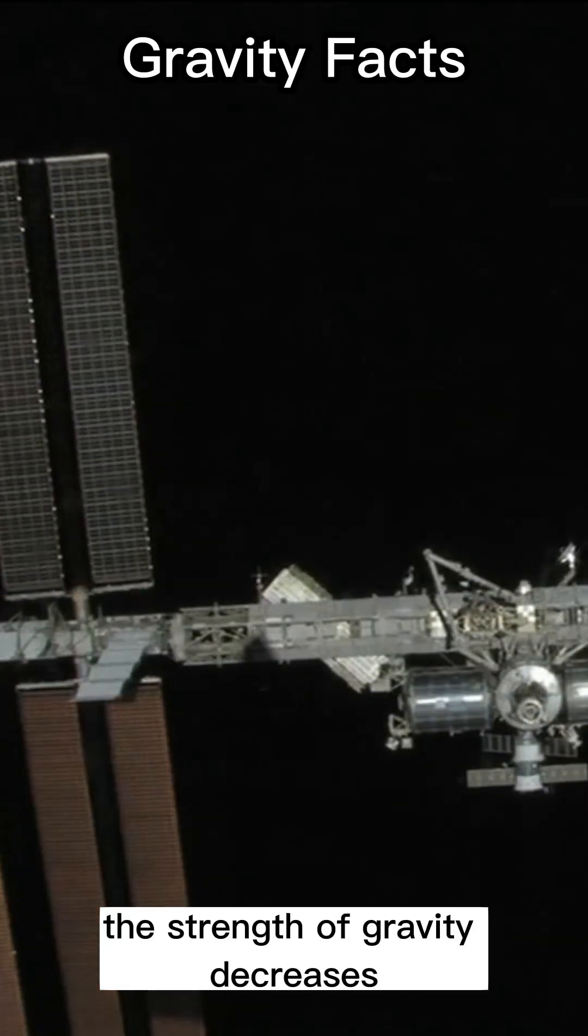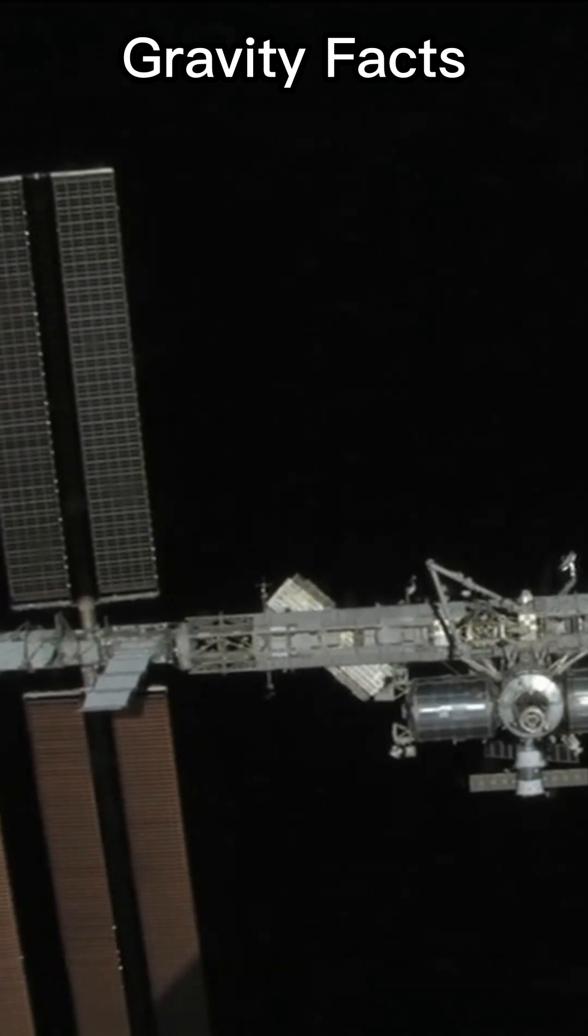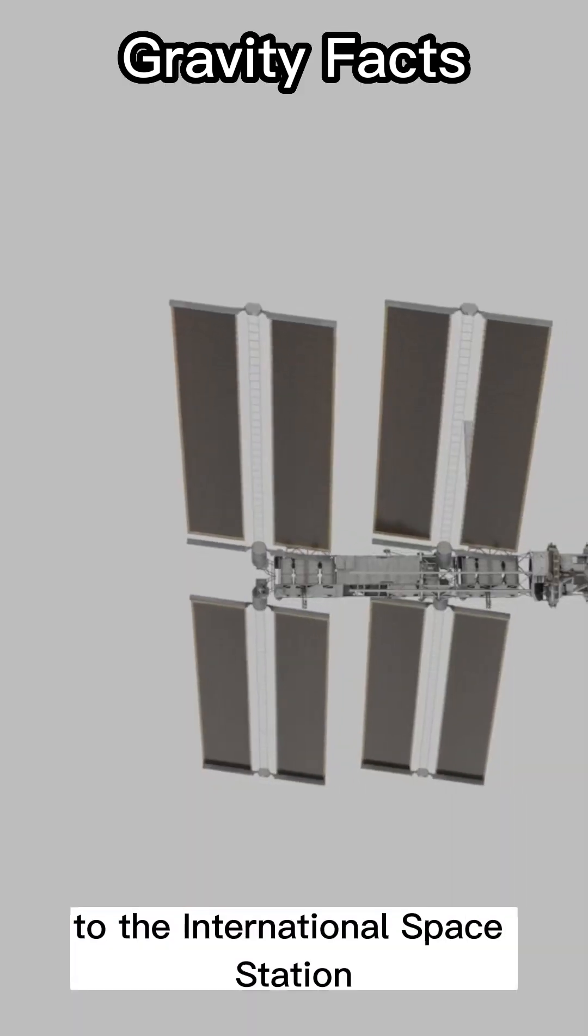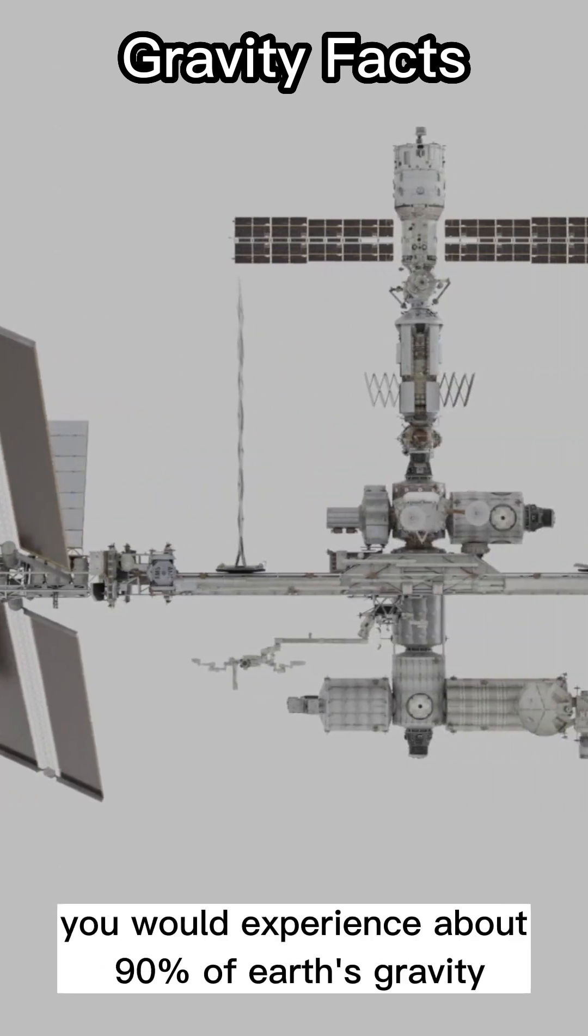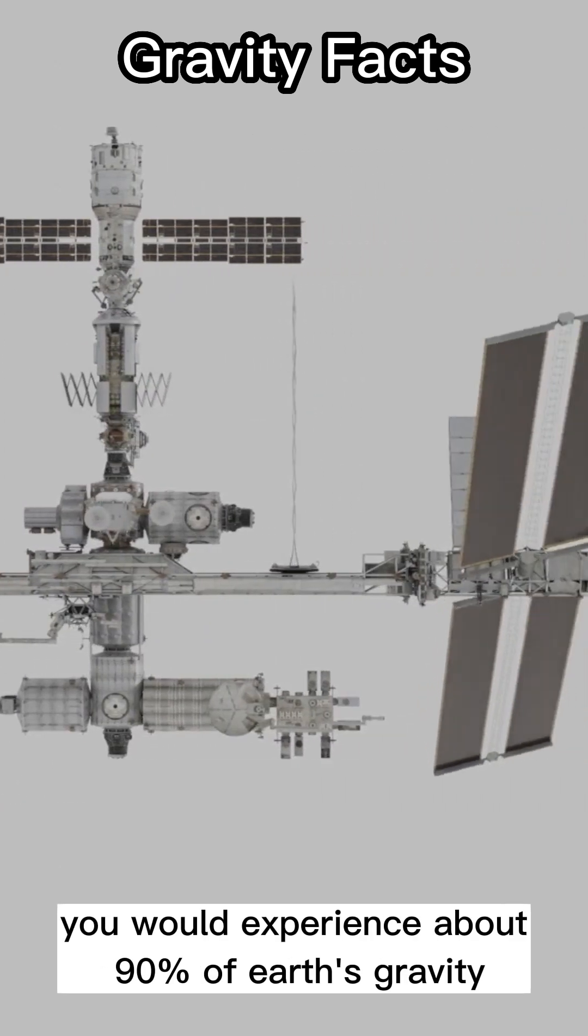The strength of gravity decreases as you move away from its surface. If you were to travel to the International Space Station, which orbits about 400 kilometers above Earth's surface, you would experience about 90% of Earth's gravity.